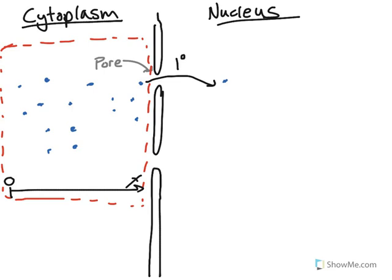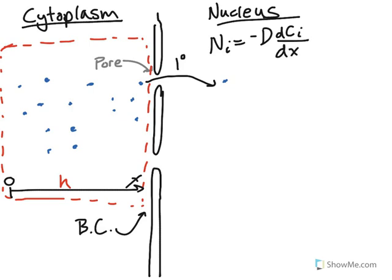This distance we'll call h. So we want to find a boundary condition at x equals h. Typically a reaction boundary condition is written as flux — the negative diffusion coefficient times the concentration gradient of species i — equals some reaction term. This reaction term can be a first, second, or third order rate law, Michaelis-Menten kinetics, or just a constant rate.